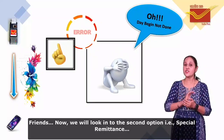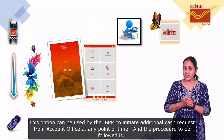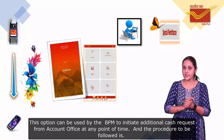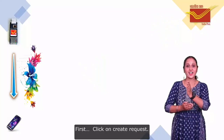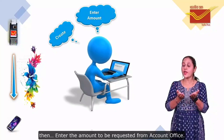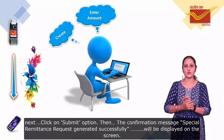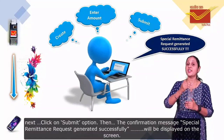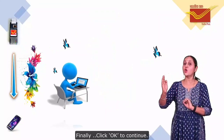Friends, now we will look into the second option, i.e., Special Remittance. This option can be used by the BPM to initiate additional Cash Request from Account Office at any point of time. The procedure to be followed is: First, click on Create Request. Then, enter the amount to be requested from the Account Office. Next, click on the Submit option. Then the confirmation message 'Special Remittance Request generated successfully' will be displayed on the screen. Finally, click on OK to continue.